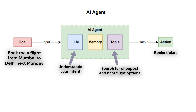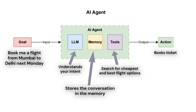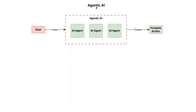It books the ticket through an API integration and sends you a confirmation of the booking. Now if you ask again 'Book me a flight from Mumbai to Delhi next Monday,' it already has the previous booking stored in its memory, so it shows you that the ticket has already been booked from Mumbai to Delhi next Monday.